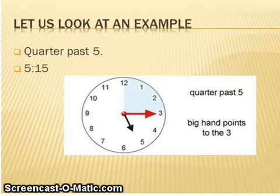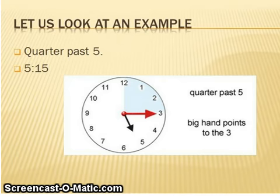Let us look at an example. Have a look at the big hand — that is the minute hand. It is pointing to the three, so it is quarter past. Now let us look at the hour hand. It passed the five, so it is quarter past five.